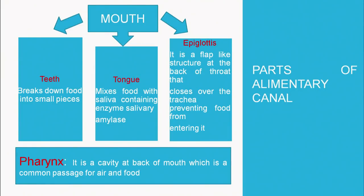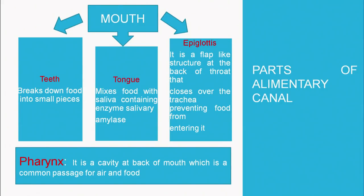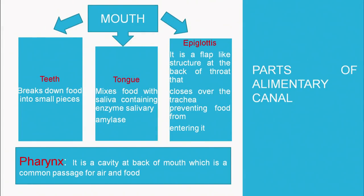The first structure is the mouth. The mouth contains the teeth, which help in breaking down food into smaller particles so that enzymes can act on it by increasing the surface area, allowing digestion to proceed better. Then comes the work of the tongue — the tongue mixes the food with saliva, which contains the enzyme salivary amylase. This enzyme works at pH around 7 to 8 and helps in breaking down carbohydrates. The third structure is the epiglottis, a flap-like structure at the back of the throat that closes over the trachea so that food does not enter the windpipe.